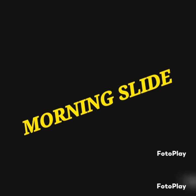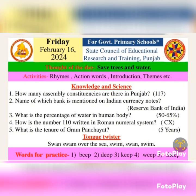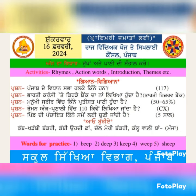Third word: Keep. K-E-E-P. Keep. Keep means rakhana. Fourth word: Weep. W-E-E-P. Weep. Weep means rona.